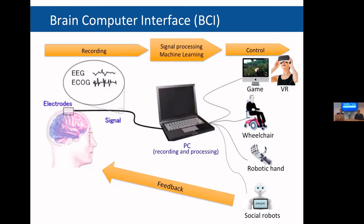We use these state classifications in order to make a connection between the human and technology — some external machine that could be a computer or a robotic platform. Once we have this connection between the human and the machine, there is also a feedback element that can happen actively, when the user sees how their intentions have been translated into commands for machines, or passively, where the technology changes in the background based on the desires of the human.